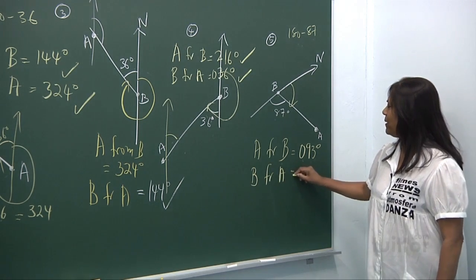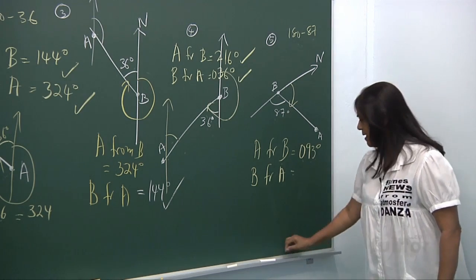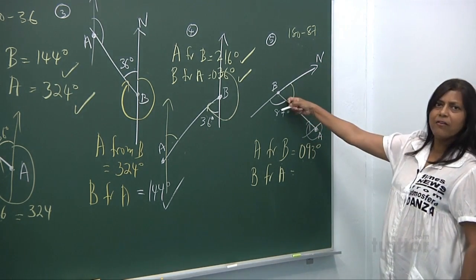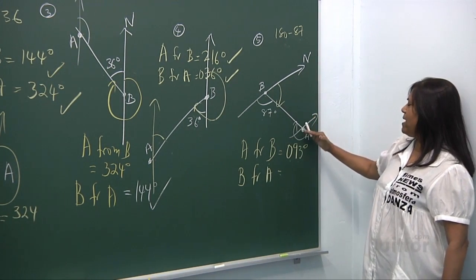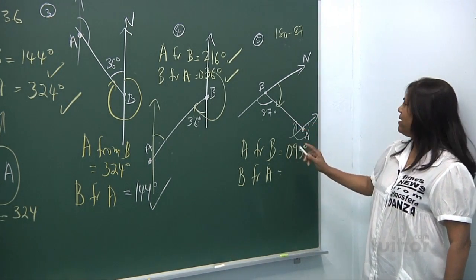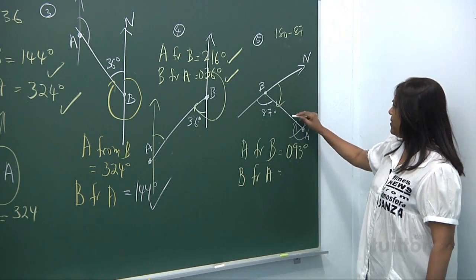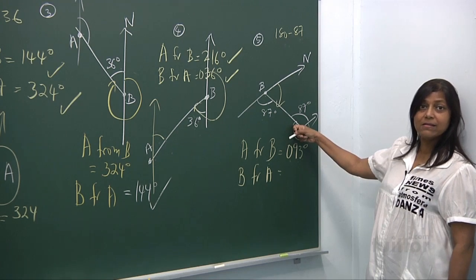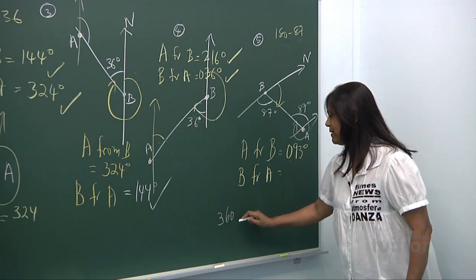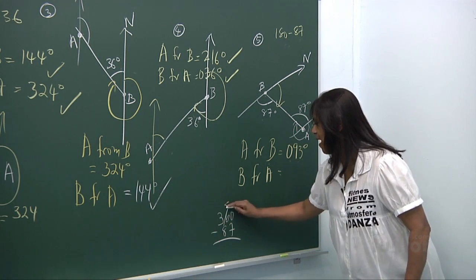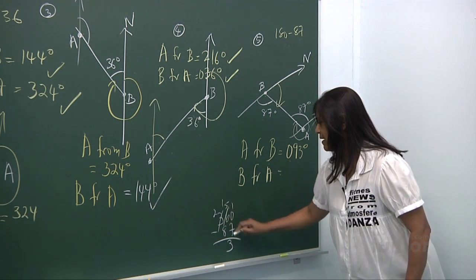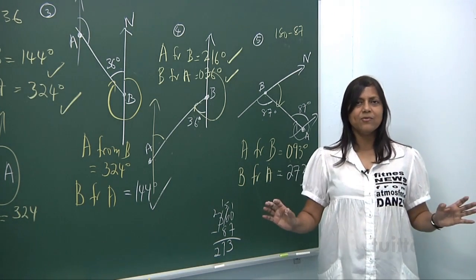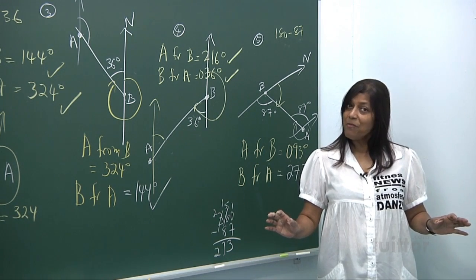What is the bearing of B from A? From A, draw north and go all the way — through north, east, south — moving further. This angle is an alternate angle to 87 degrees. So it's 360 minus 87. Borrowing: 360 minus 87 gives 273 degrees. This is just a basic introduction to bearings — we'll give you more on different directions.